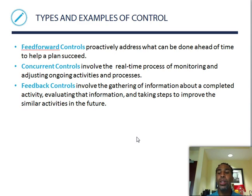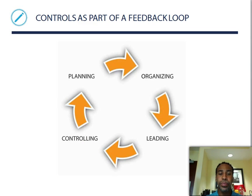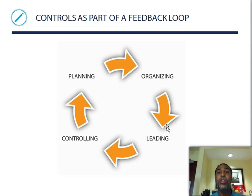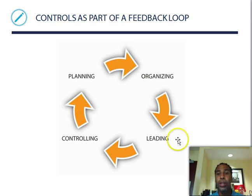Control is a part of the feedback loop. You have planning, organizing, leading, controlling — and it goes in a loop. You plan, organize, lead to make it fully functional, control to fix problems, then go back to planning. It's a never-ending loop — you plan, organize, lead, control, and continue improving.